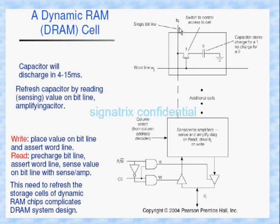We place a value on the bit line and assert the word line. The word line is asserted based on the row address — based on the row address it will assert the particular gate terminal of the transistor. The transistor will then get activated, acting as a switch, and this bit will go and be stored in the capacitor.